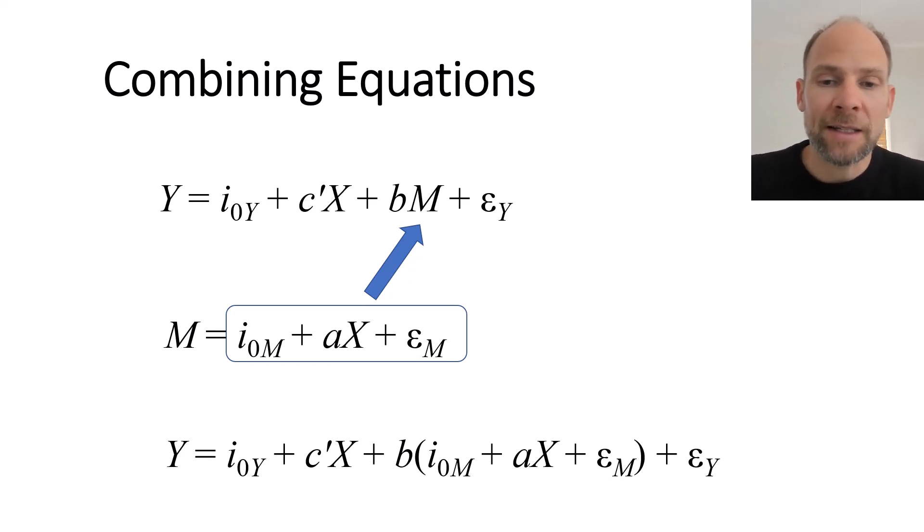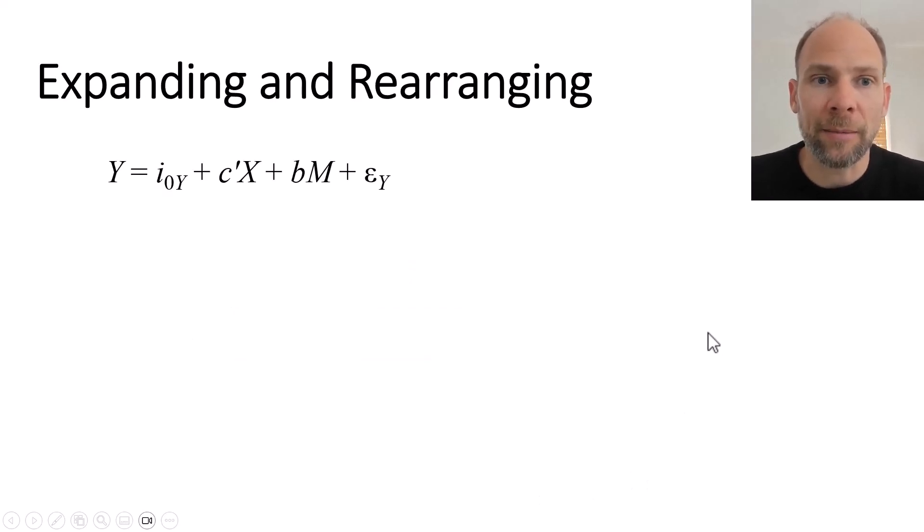When we do that Y is really dependent on X in two ways. There's one way that X enters with the c' coefficient and then again it enters here another time with a, and you can see the b here in front of the parentheses. So when we expand that we obtain a product of coefficients.